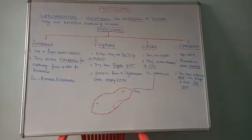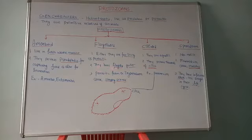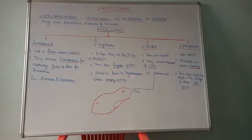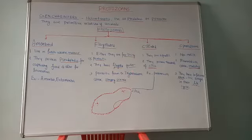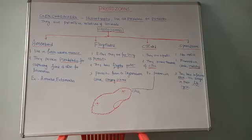Flagellated protozoans have a cavity inside the body called a gullet. The gullet is a cavity that opens outside the cell surface and is meant for passing food material. Trypanosoma is a parasitic example with a single flagella — it is a unicellular organism that draws nutrition from the human body and causes a disease called sleeping sickness. The main symptom is feeling very drowsy.